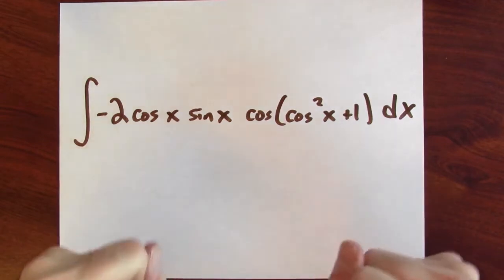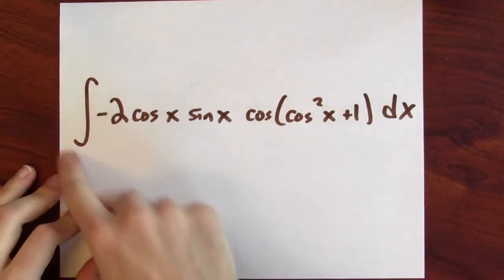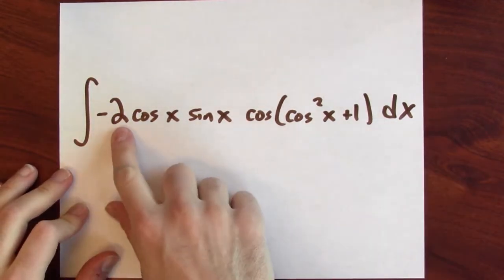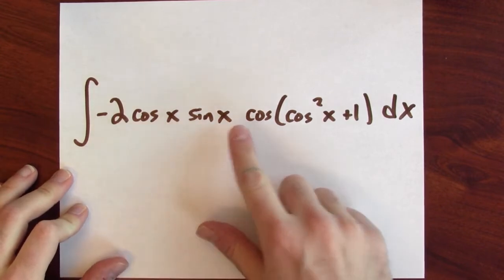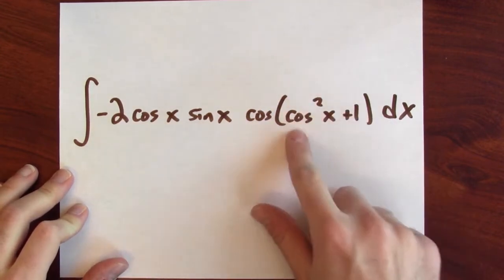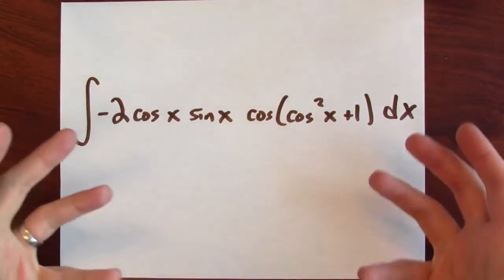Sometimes you might want to do u substitution more than once. Imagine that you've got something really terrible looking, like trying to find an anti-derivative of negative 2 cosine x sine x cosine of cosine squared x plus 1 dx. Can we find an anti-derivative of this? We can.